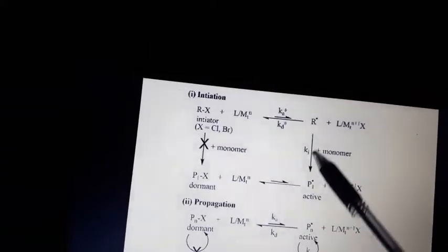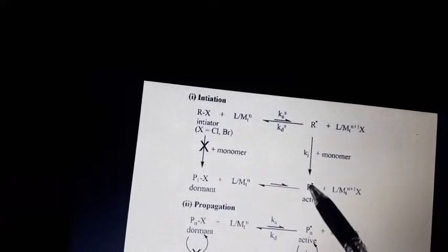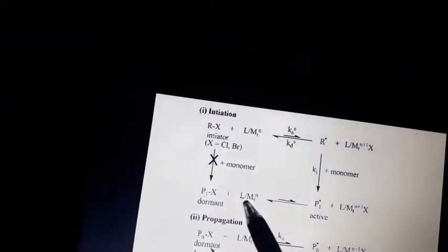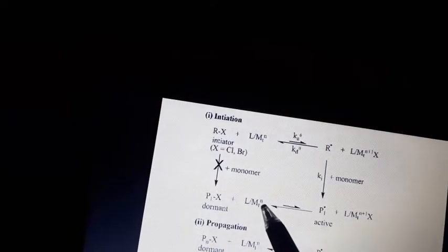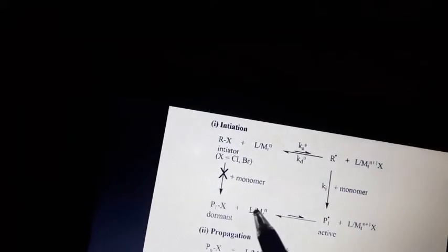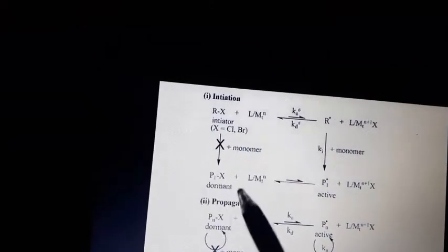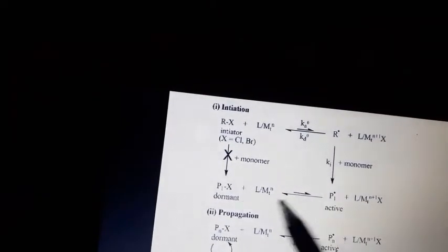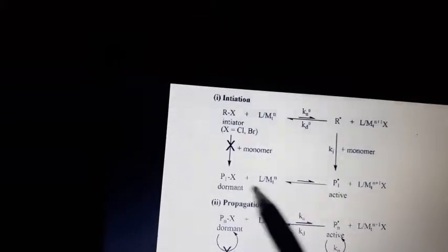We can add a monomer to make a polymer once we have a free radical and initiation starts. An equilibrium is established between the dormant polymer chain, in which the halide is transferred from the inactive catalyst to the polymer, and the active catalyst with the active polymer chain. This equilibrium between active and inactive catalyst, and active and dormant polymer chain, controls the growth of the polymer chain and molecular weight — that is why it is called controlled radical polymerization.